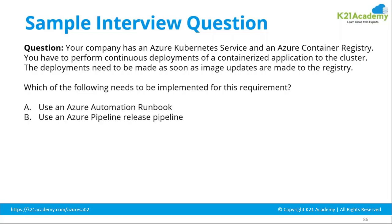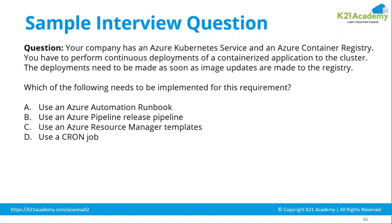Which of the following needs to be implemented for this requirement? Use Azure Automation Runbook, use Azure Pipeline release pipeline, use a Resource Manager template, or use a cron job. This particular question is coming from the DevOps side. People who have not attended any DevOps training might find difficulty on this question because it requires DevOps understanding. But we have included it just to have it as part of the discussion.